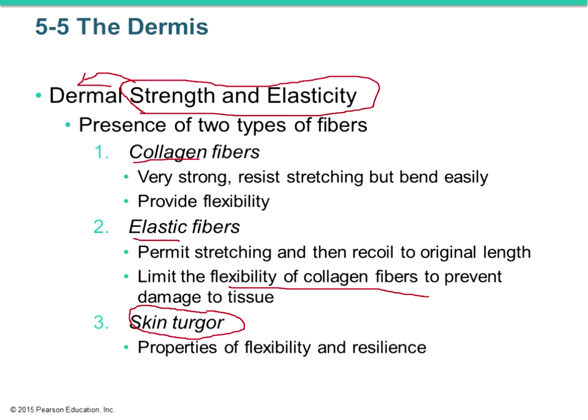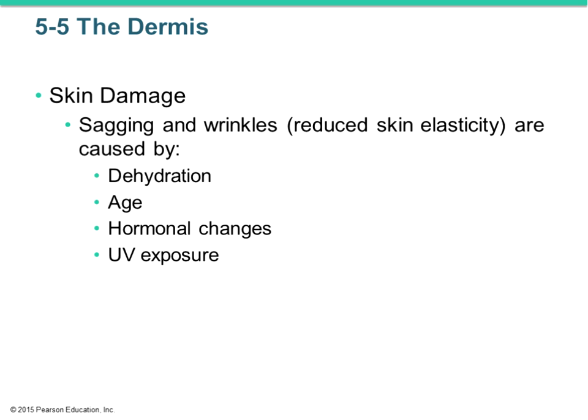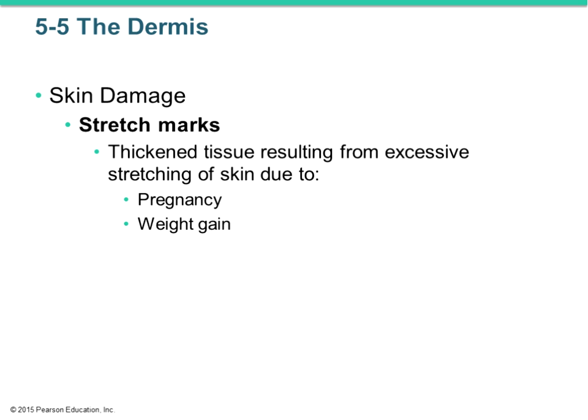Unfortunately, over time we can see damage to the skin. Sagging and wrinkles can be caused by dehydration, aging, changes in hormones, and UV exposure. When you see sagging or wrinkles on the skin's surface, it's actually a reflection of what's going on in the dermis — because that's where the collagen and elastic fibers are. Stretch marks, wrinkles, and thickened tissue all come from damage to the dermis.